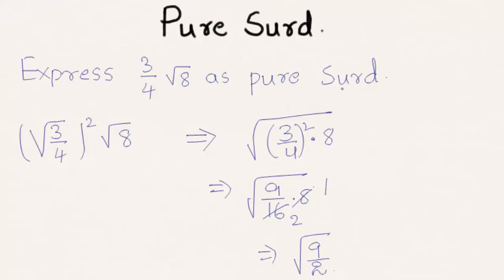So here under root 9 by 2 is a pure surd of 3 by 4 root 8. This was a basic introduction on pure surd. Hope you understood the concept. Do like and subscribe to WeTeachAcademy.com. Thanks for watching, have a nice day.